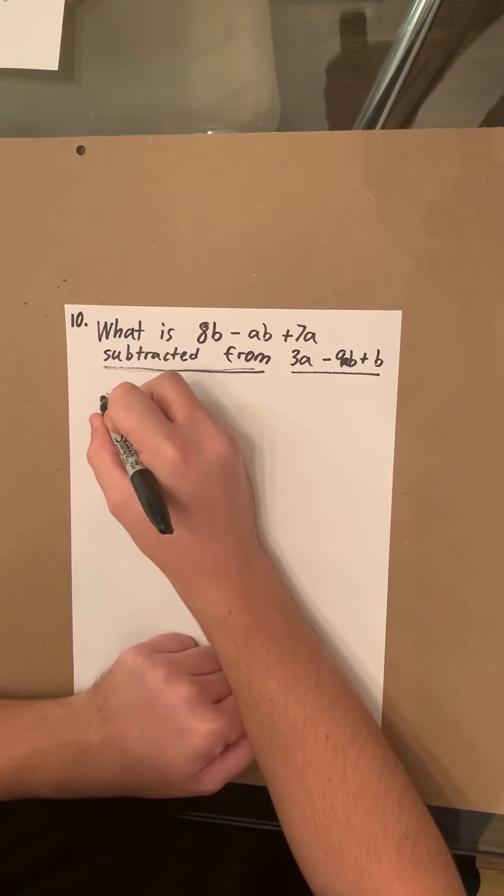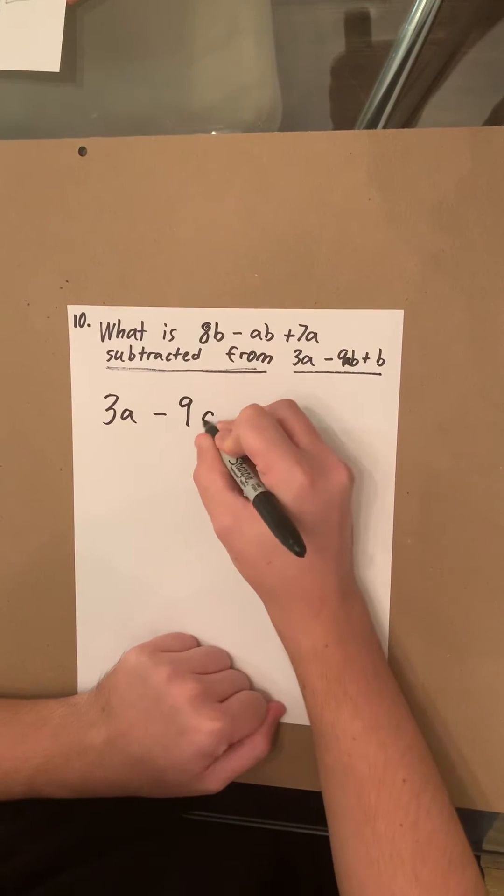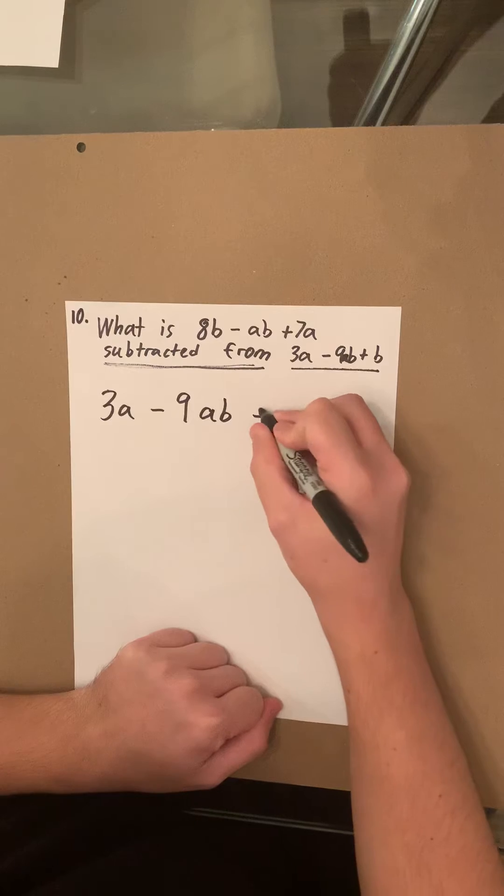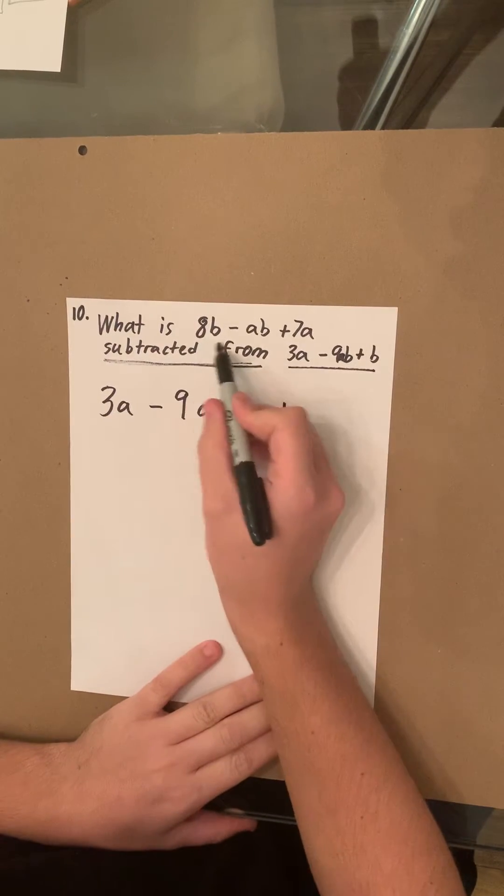So let's write it out. We have 3A minus 9AB plus B. So this is our number on top.